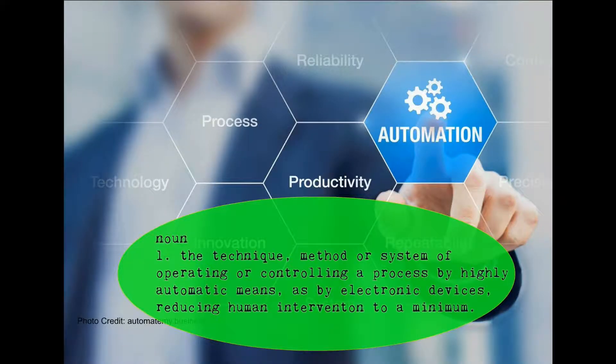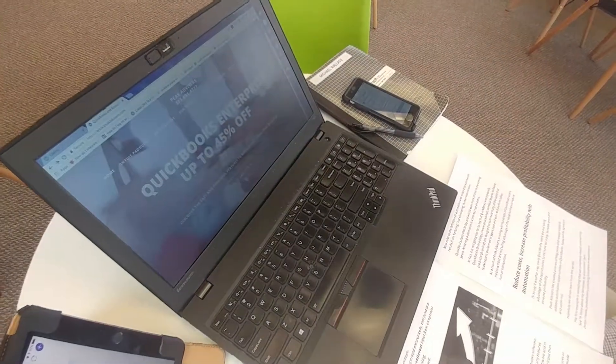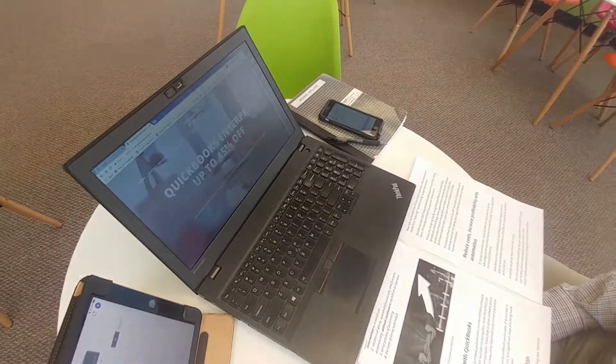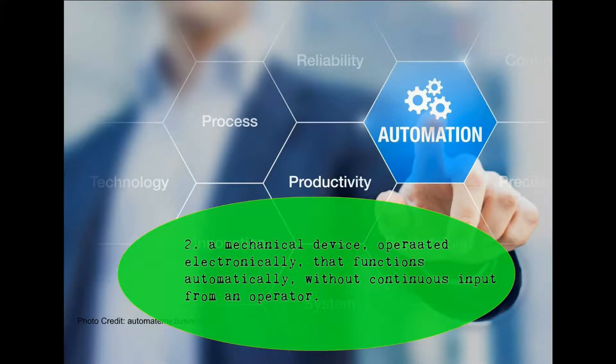Let's talk about what automation is first, because that definition is going to underscore this conversation we're going to have over the next few weeks and the series of blog posts and videos. Automation: the technique, method, or system of operating or controlling by highly automatic means or electronic devices that reduce human intervention to a minimum — a mechanical device operating electronically that functions automatically without continuous input from an operator.